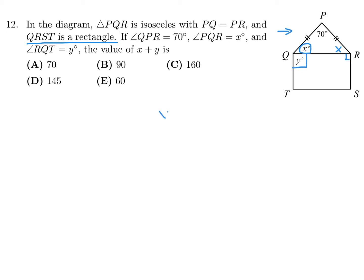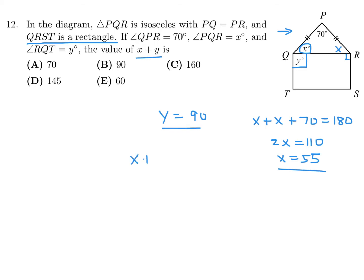So that means Y is 90 degrees. Now let's calculate X. The sum of the angles of a triangle add up to 180, so X plus X plus 70 is 180. Therefore 2X is 110, and X is 55. Then X plus Y is going to be 55 plus 90, which is 145. Therefore number 12 is D.